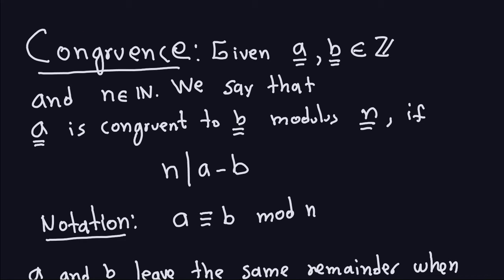So what is congruence? We have two integers A and B, and some natural number N. We say that A is congruent to B modulus N — involving three numbers, two integers A and B and a natural number N. We say two of them are congruent modulus the other number if the difference B minus A is divisible by N. So N divides the difference of the two numbers.